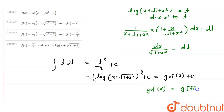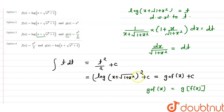If we assume option 3, where f(x) and g(x) have specific values, then when we put those values, g(f(x)) should equal [log(x + √(1+x²))]². If this is satisfied, then option C is the correct option. Otherwise, we will check options 1, 2, and 4.